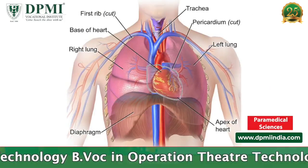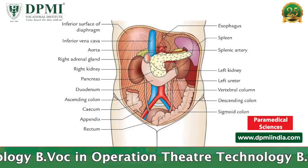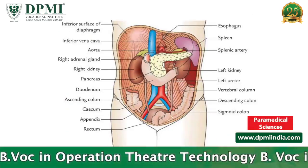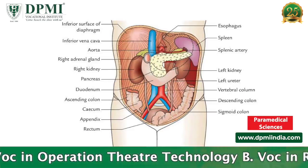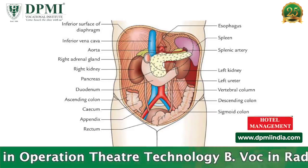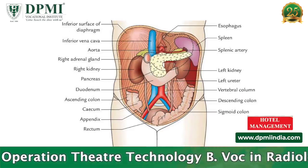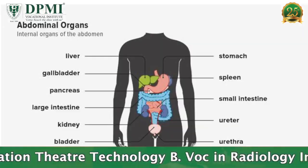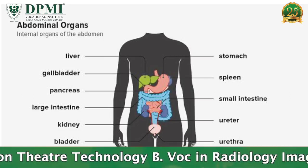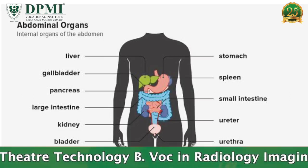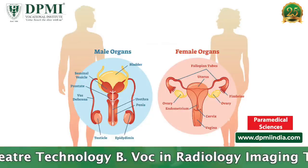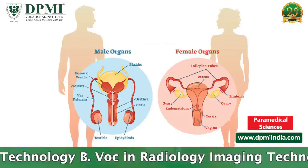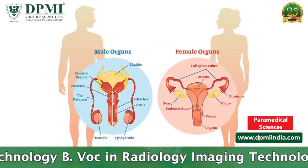The abdominal-pelvic cavity fills the lower half of the trunk and is subdivided into the abdominal cavity and the pelvic cavity. The abdominal cavity holds the digestive organs and the kidneys. The pelvic cavity holds the reproductive organs and organs of excretion.